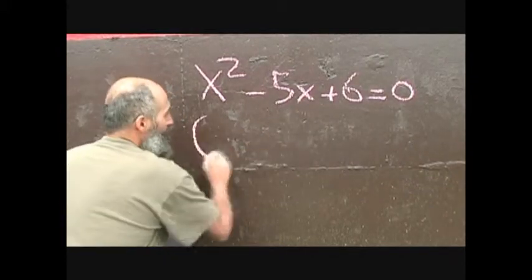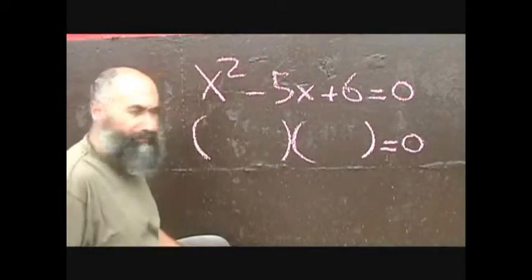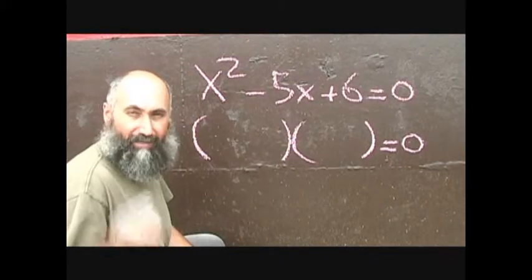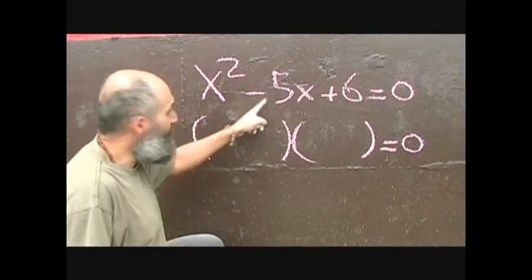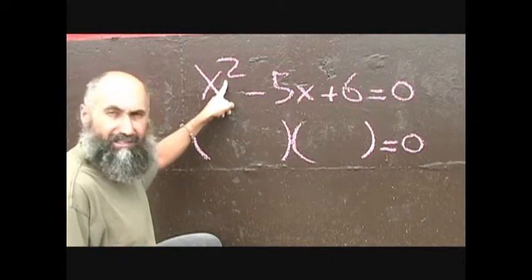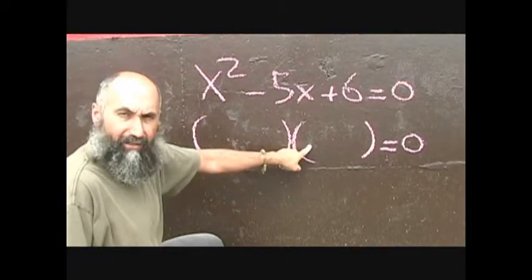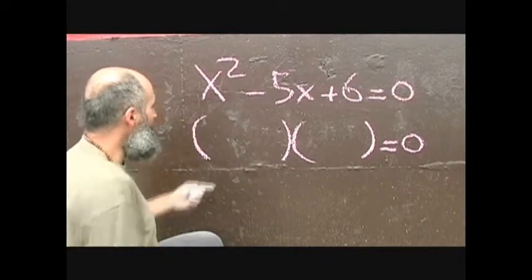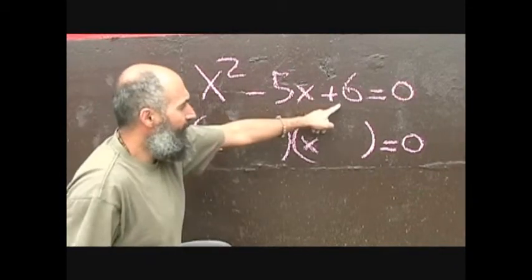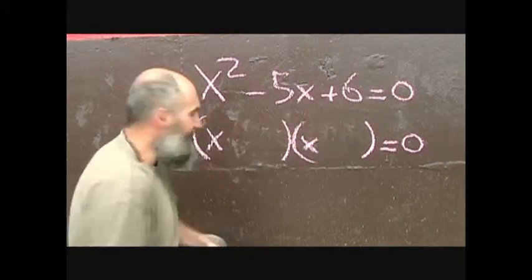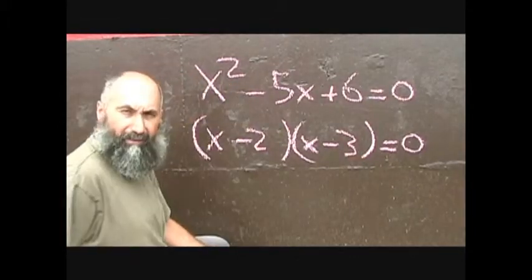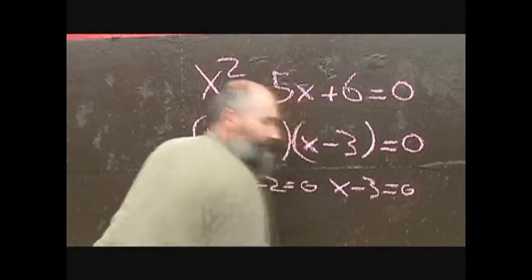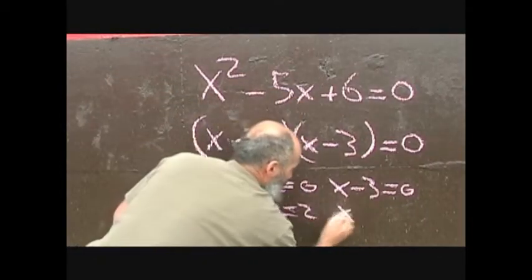When you're solving this, all you do is you go bracket, bracket, bracket, bracket, equals 0. You're looking for two numbers that multiply to give you 6 and add to give you negative 5. Negative 2 times negative 3 gives you positive 6, and negative 2 plus negative 3 gives you negative 5. So those are your numbers. You break x squared into x and x, giving you (x minus 2)(x minus 3). Setting each equal to 0: x equals 2 and x equals 3.